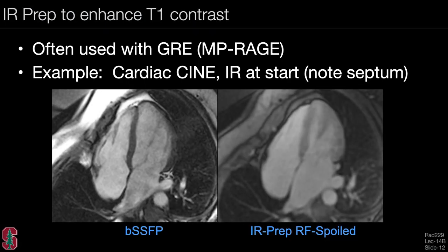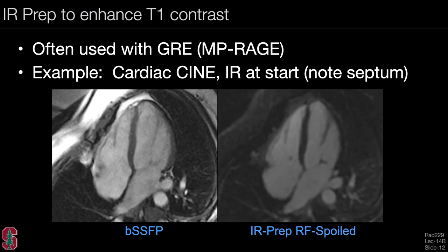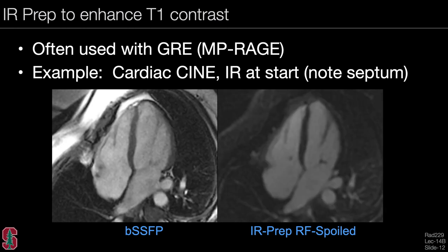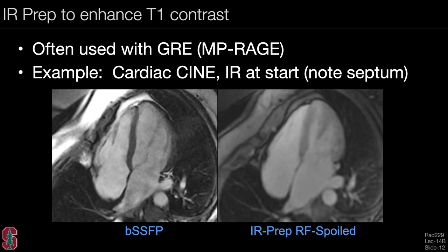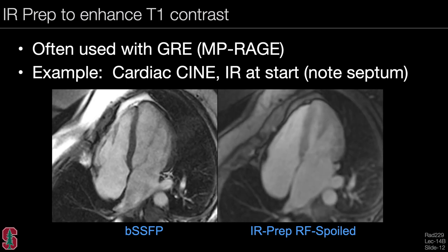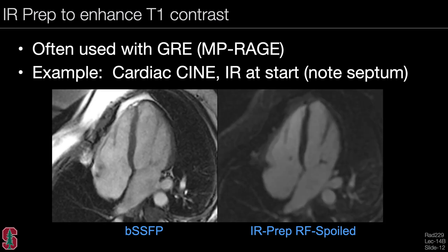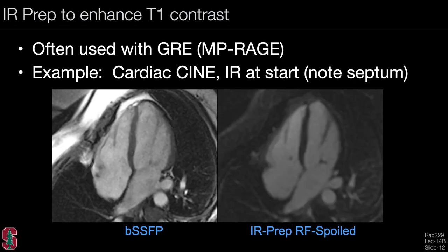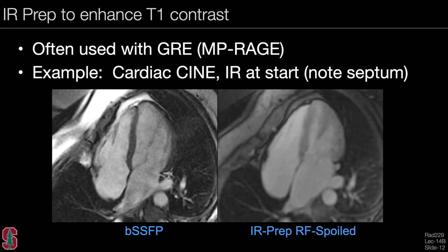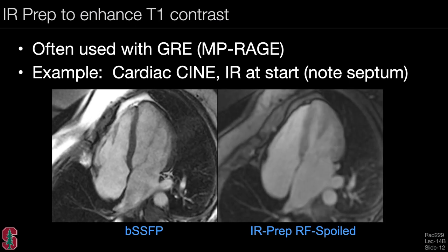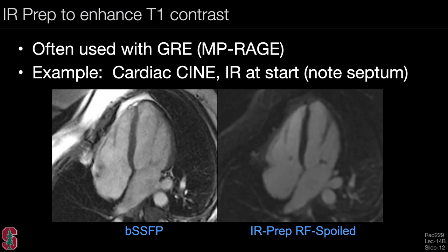Inversion recovery preparation is also often used to enhance T1 contrast rather than simply null tissue. This is often used with gradient-spoiled imaging, which has mixed contrast—this is MP-RAGE. An example shows a balanced SSFP sequence with no magnetization preparation where signal is steady throughout the cardiac cycle. With an inversion recovery preparation, the septum between the ventricles is quite dark initially and well suppressed, but it recovers. This demonstrates the transient contrast you can get when the magnetization preparation wears off.